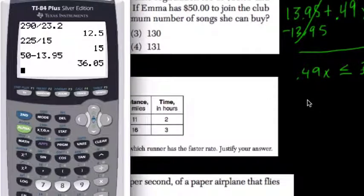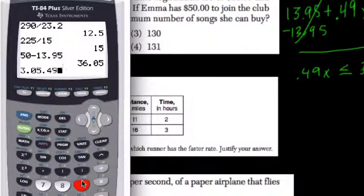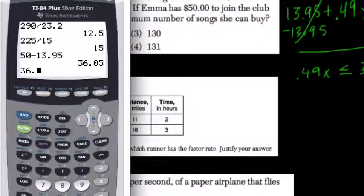So to solve this, we divide both sides by $0.49, or $36.05 divided by $0.49. That's just saying, how many songs can you buy with $36.05 if each song is $0.49?